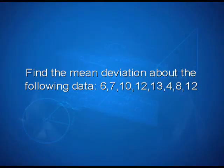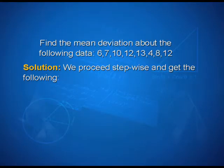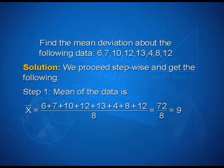Now let us see an example. Find the mean deviation about the mean for the following data: 6, 7, 10, 12, 13, 4, 8, 12. For the solution we proceed stepwise. Step 1: the mean of the data is x̄ = (6 + 7 + 10 + 12 + 13 + 4 + 8 + 12) / 8 = 72 / 8 = 9.